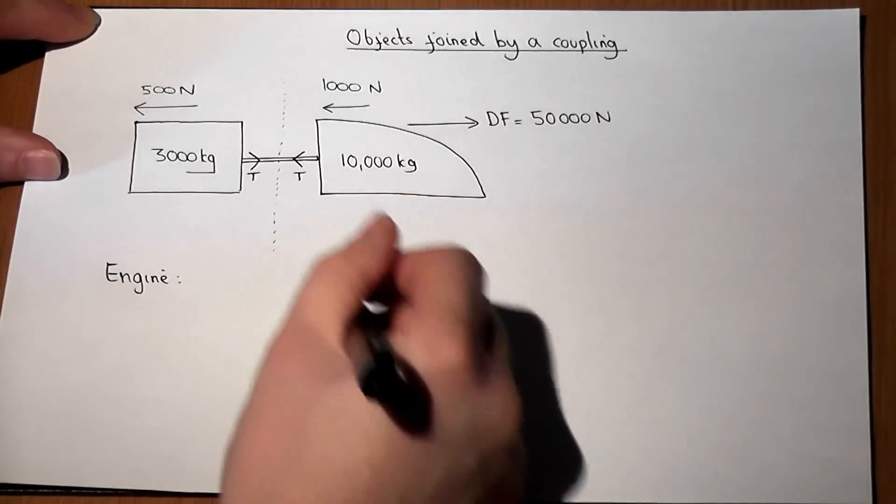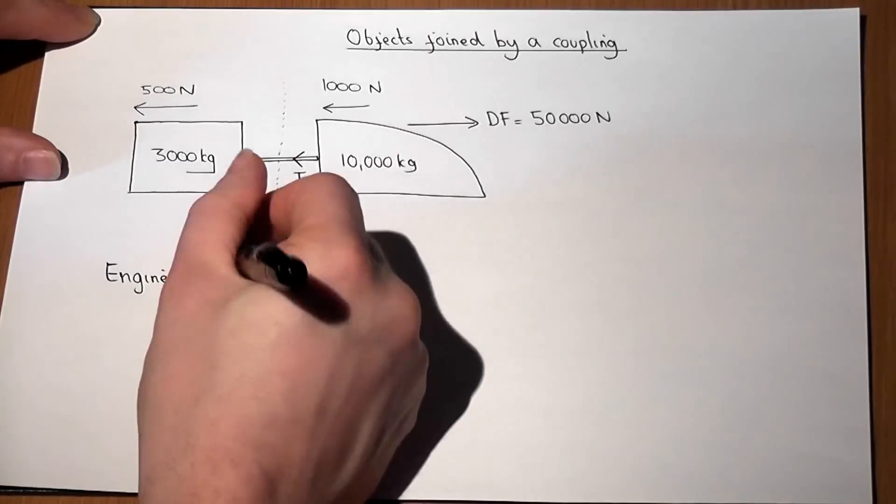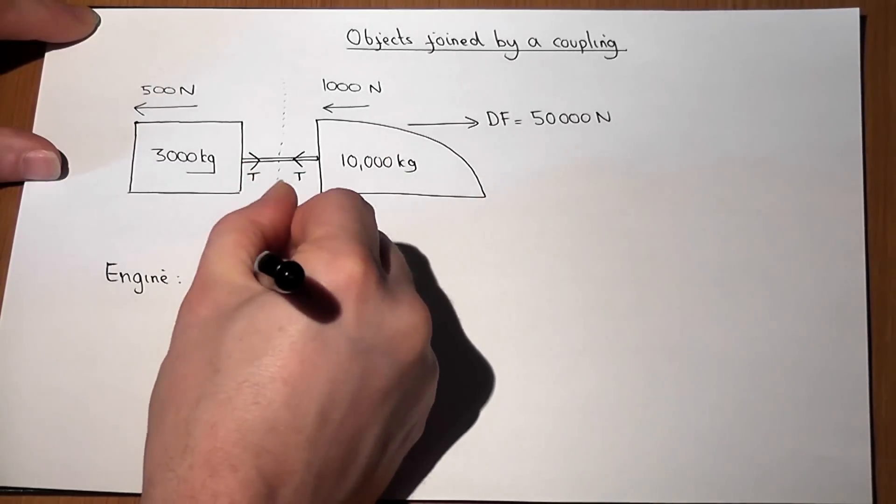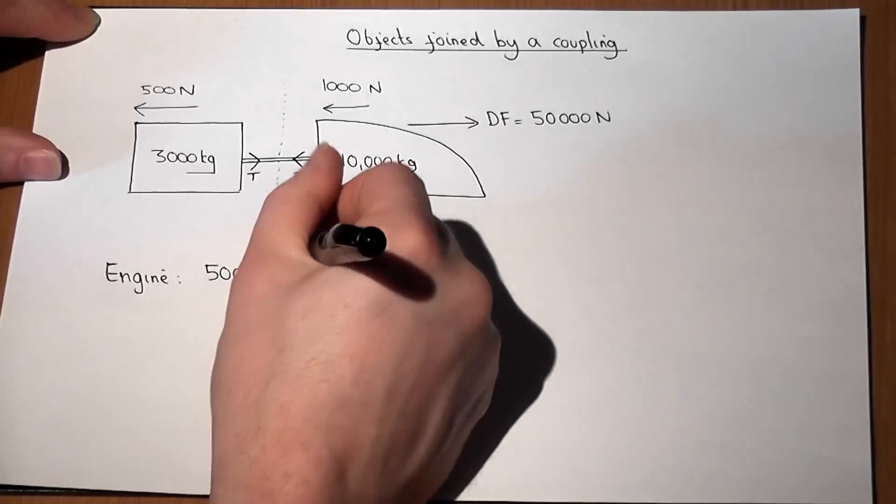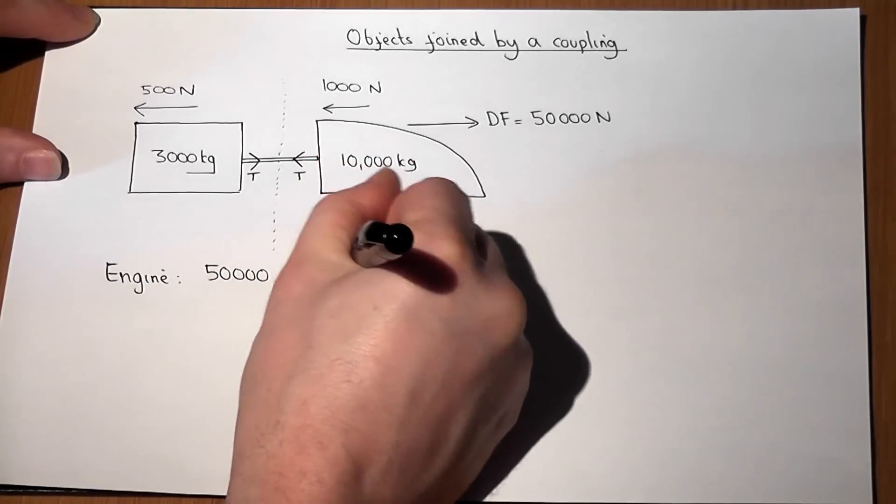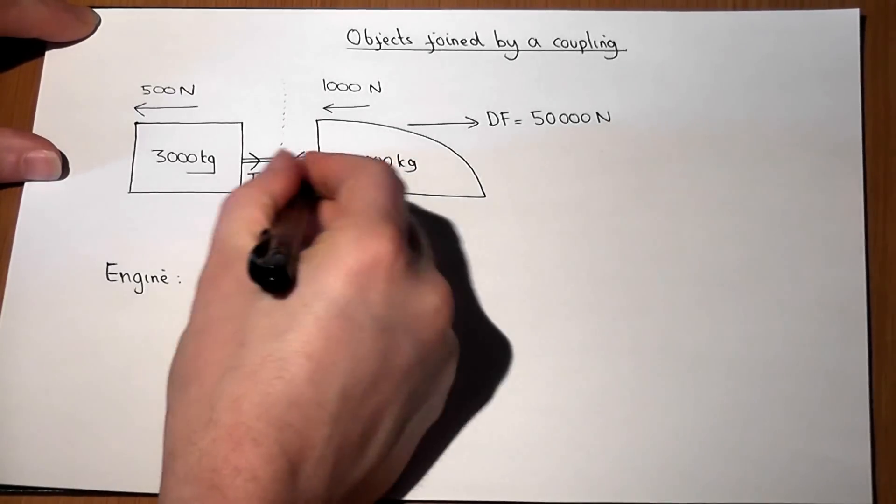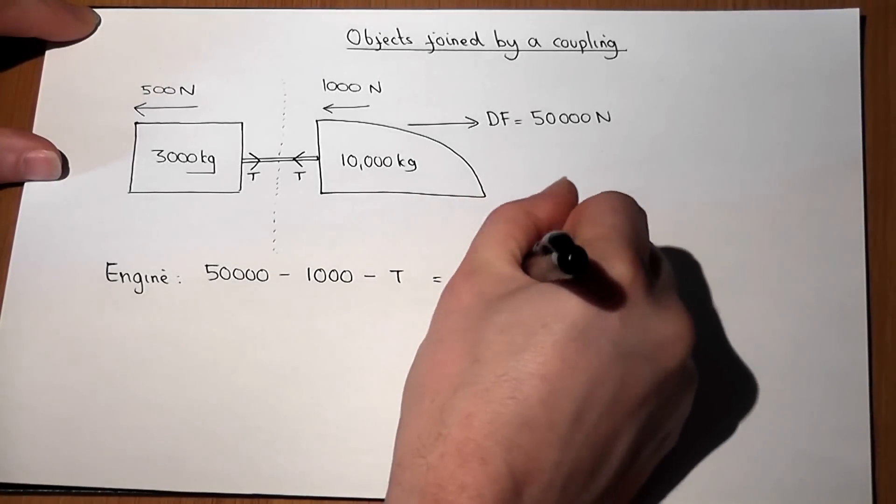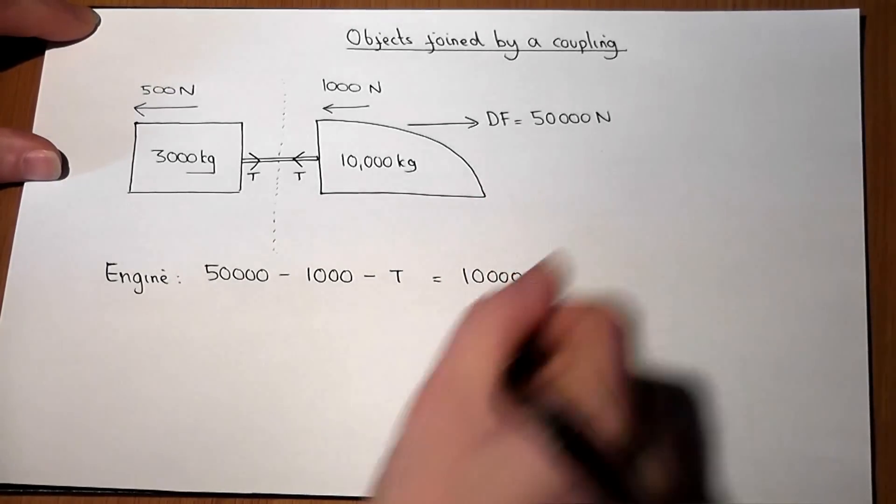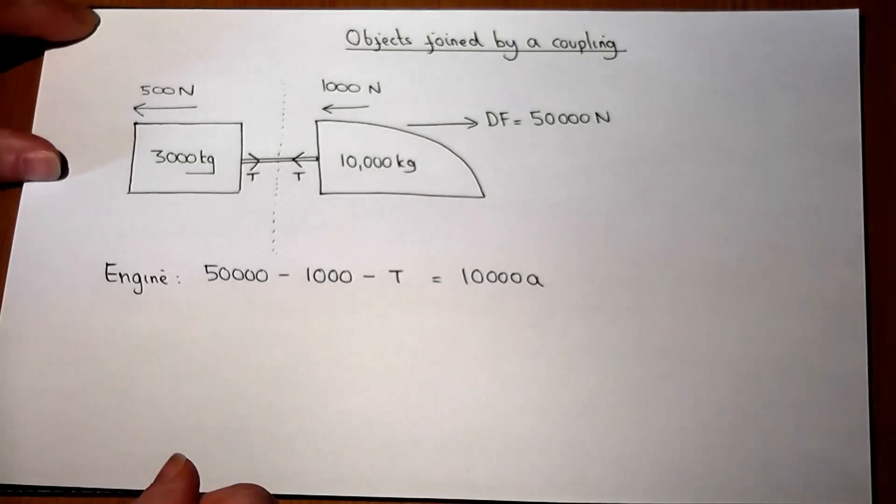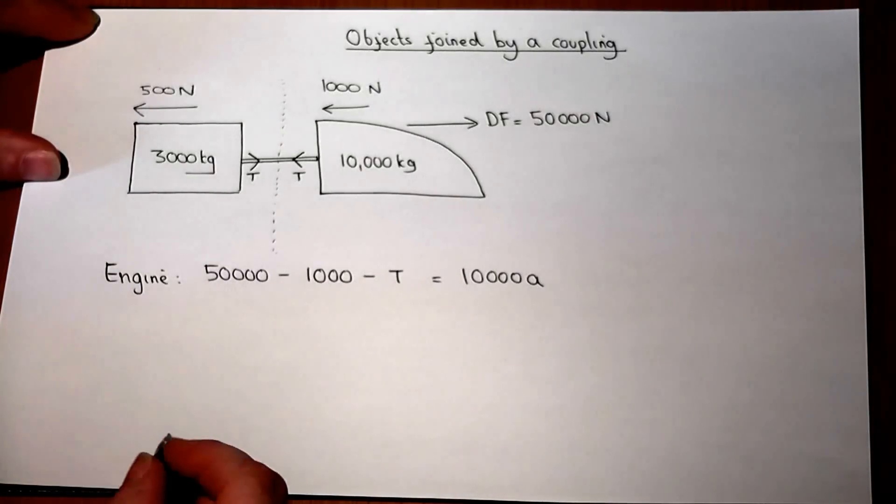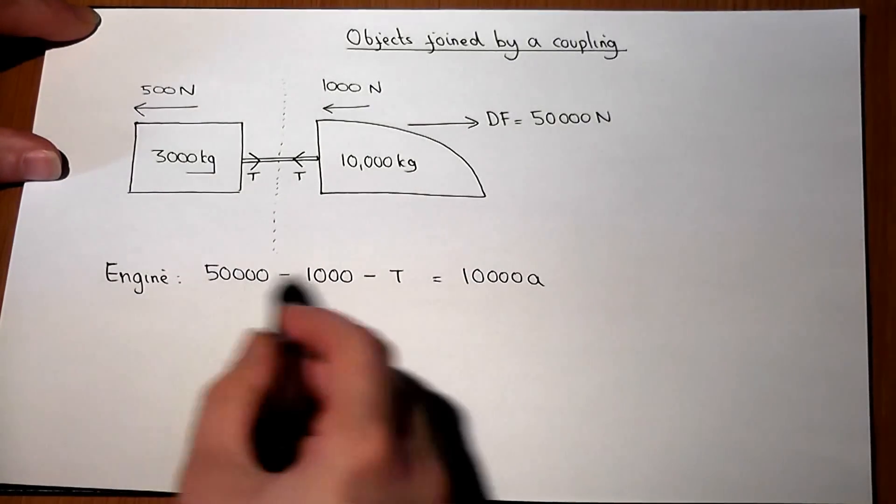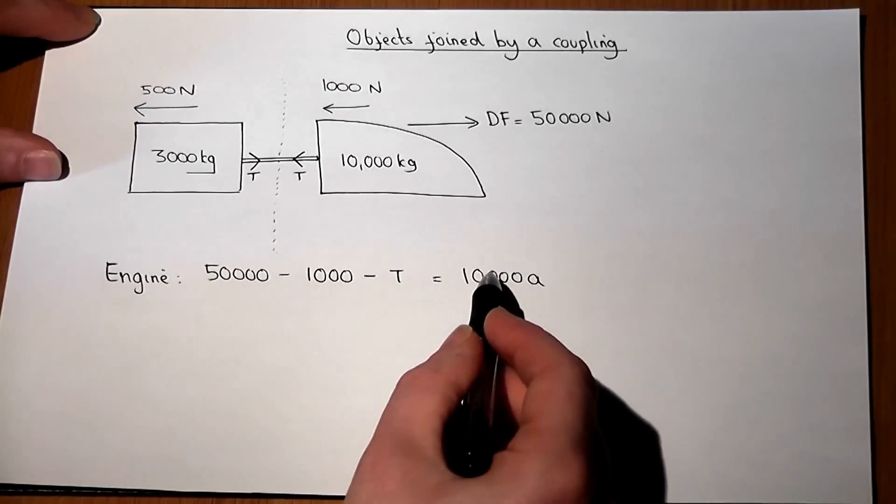Now the engine has force to the right of 50,000 newtons but this has been opposed by the resistance force of 1,000 and also by the tension in the tow bar, and this will equal its mass times its acceleration. So we use Newton's second law to write down the resultant force equal to mass times the acceleration.